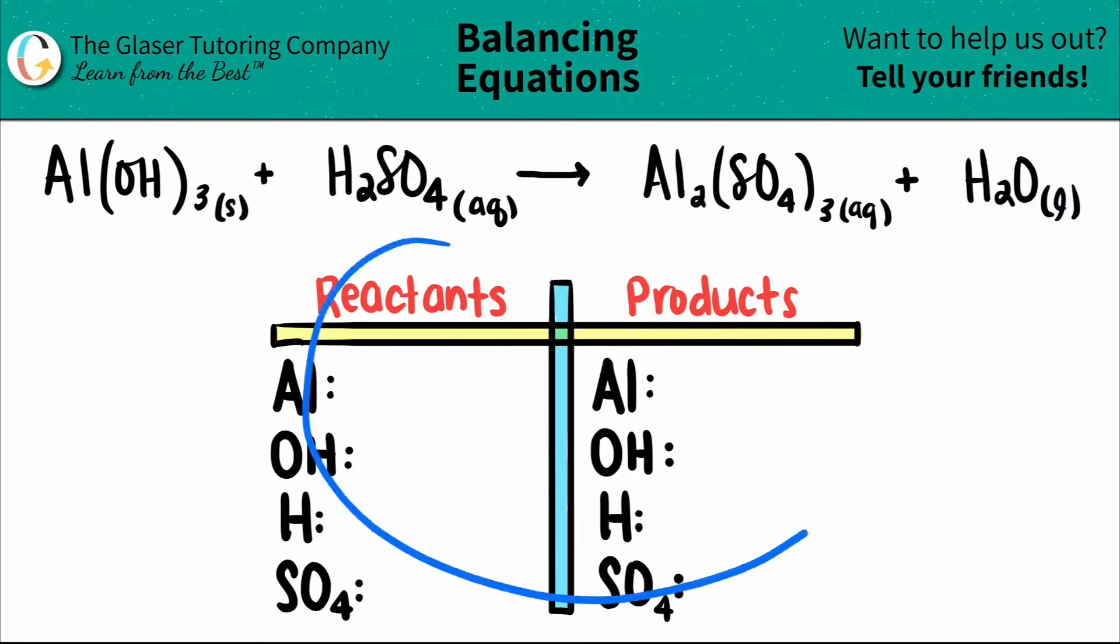So I already wrote down our chart and all of the elements or the polyatomics that I see. Now, I'm going to give you a little trick. If you see that you have your polyatomic hydroxide on one side of the equation, and if you see water on the other, the easiest way to balance this is to just change the water into not H2O, but to say HOH. This is the same as H2O. I have one oxygen and I have two hydrogens.